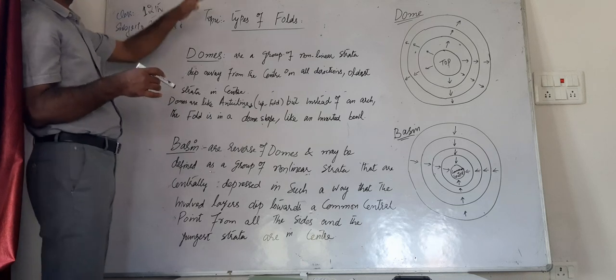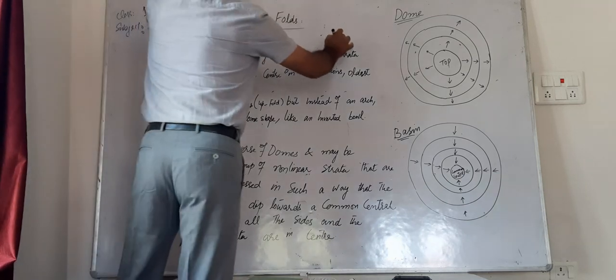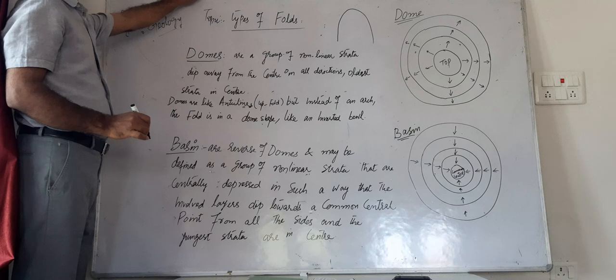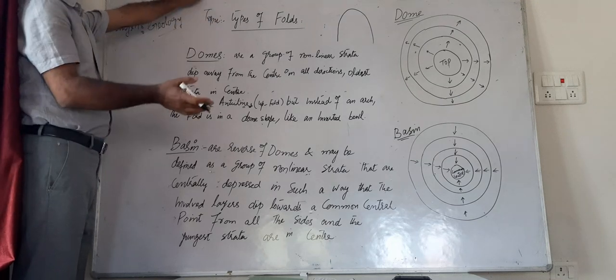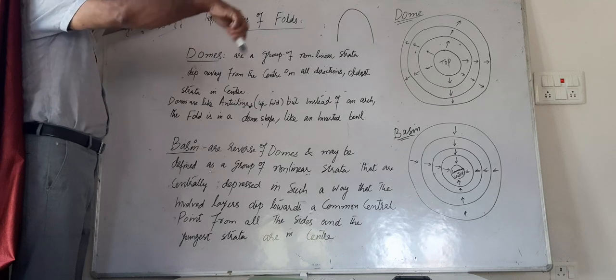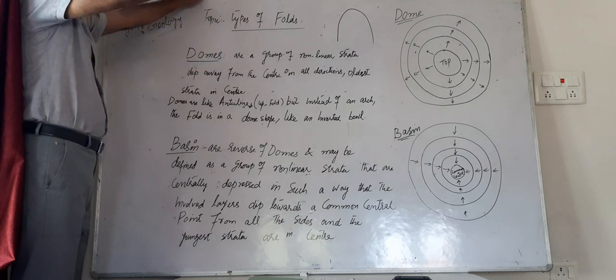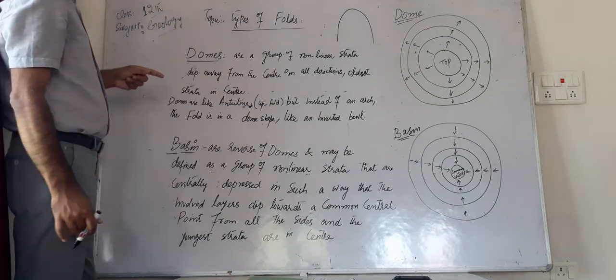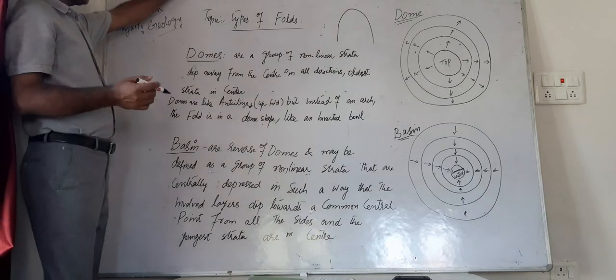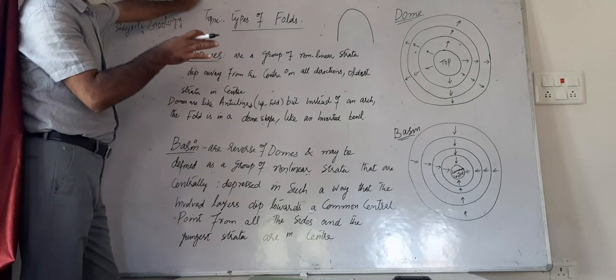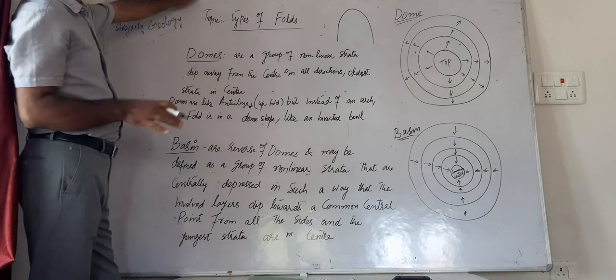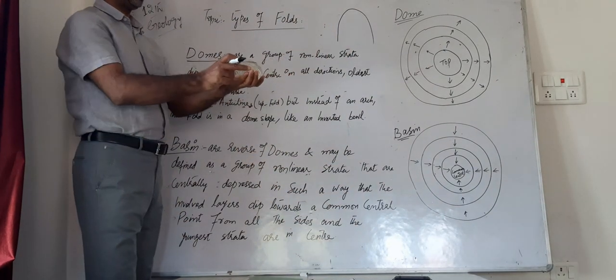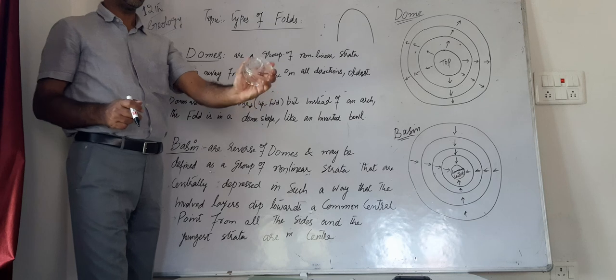The difference between anticlines and domes is that dome is shaped in a circular raised platform form. Domes are like anticline upfolds but instead of arches, the fold is in a dome shape. I have brought a bowl - just like the shape of a bowl.